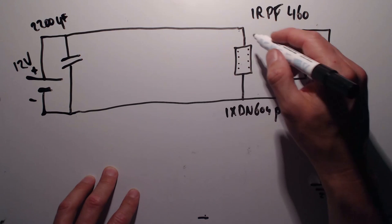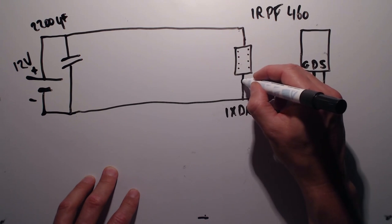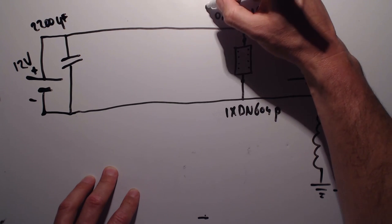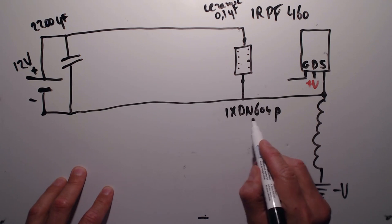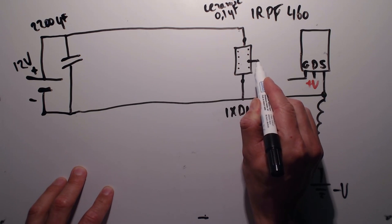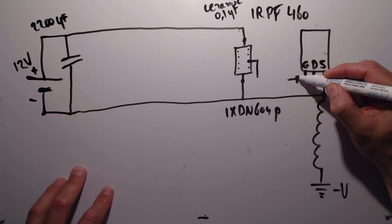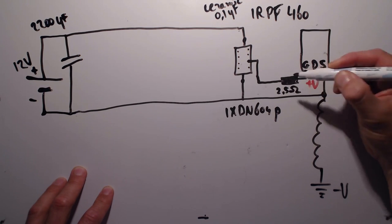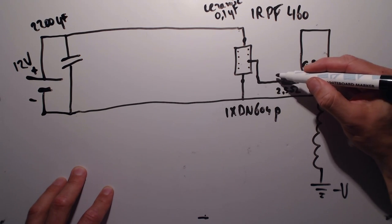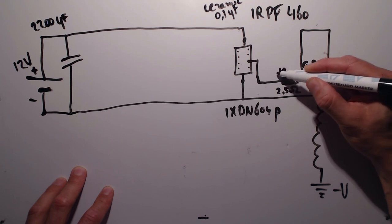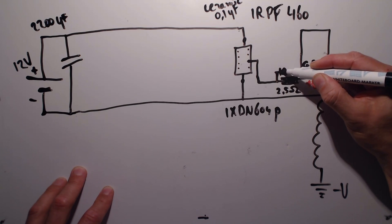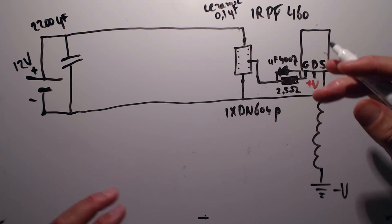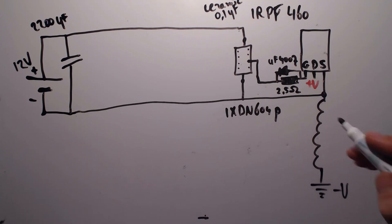I advise you to put a capacitor over this power supply as well. A small one, like a 0.1 microfarad ceramic. The output of that IXDN604P will drive the gate. And the gate will have a resistor to limit the current of 2.5 ohm. And what I did was put an ultra-fast diode over it. So it can discharge really quickly. The MOSFET switch will really quickly open the circuit. And that's good. That's what we want.